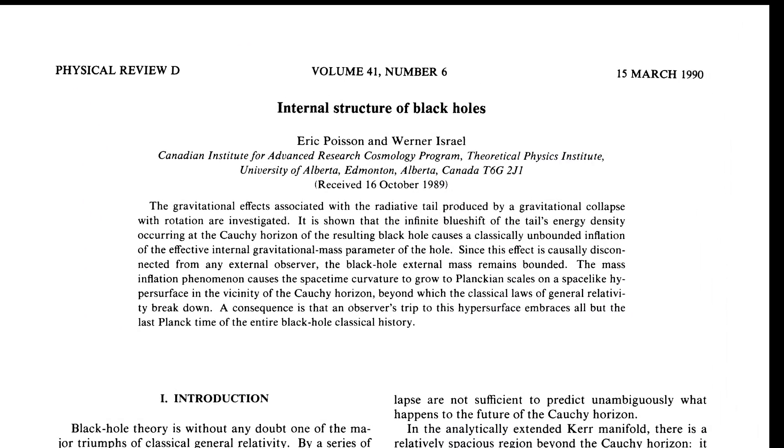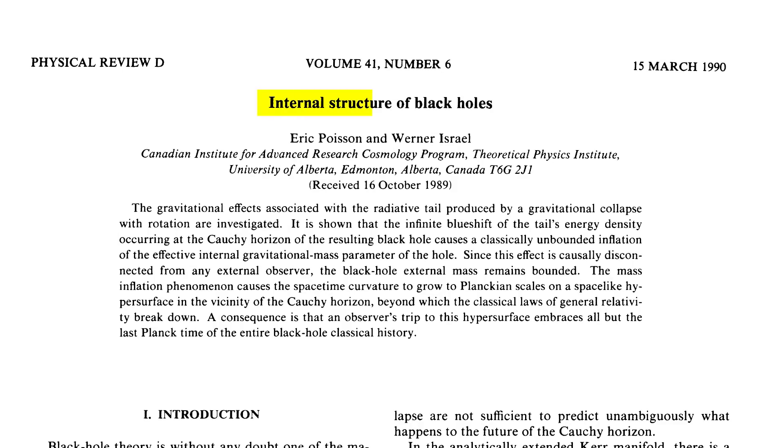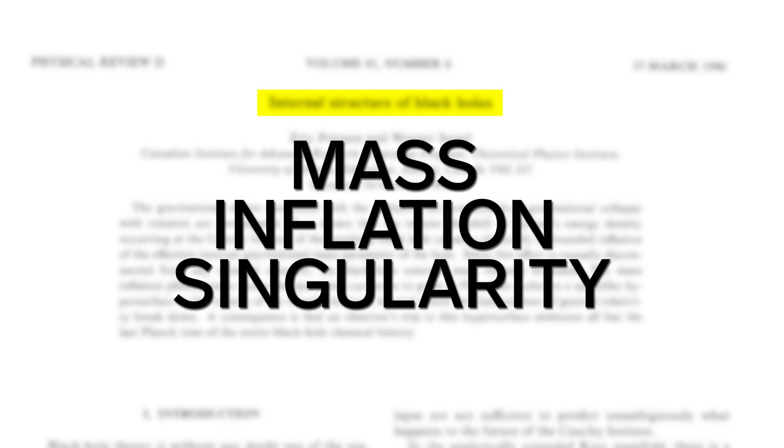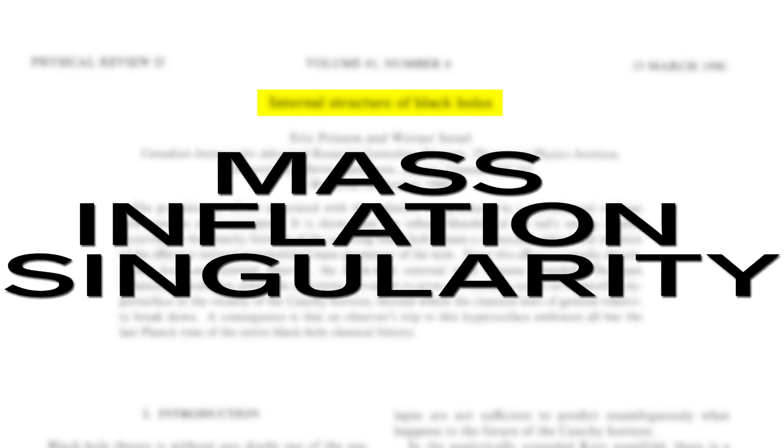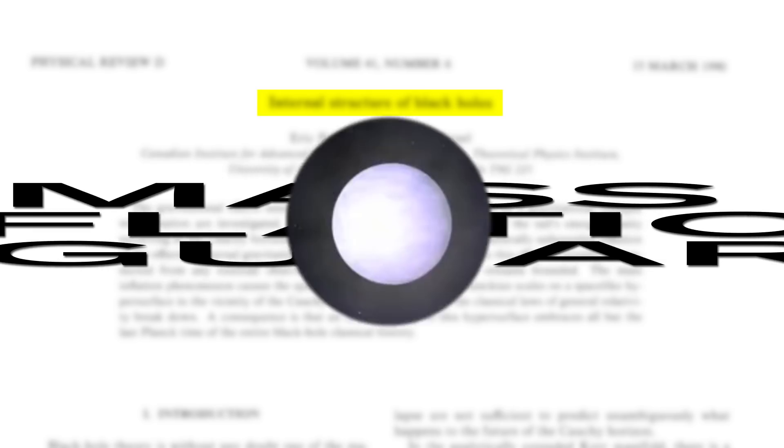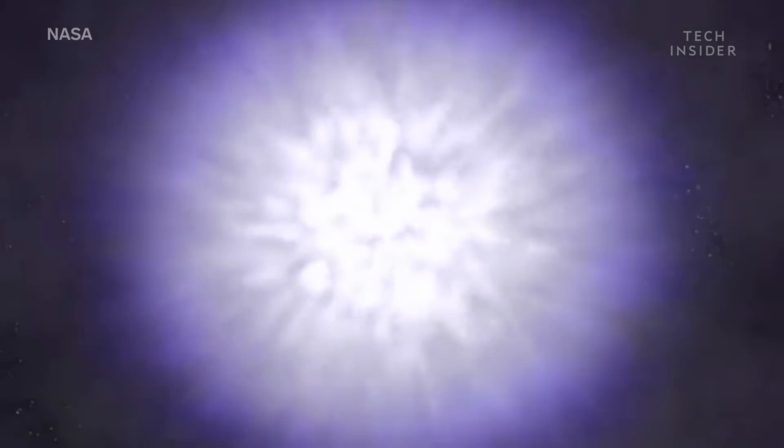But that all changed in the early 1990s, when different research teams in Canada and the US discovered a second singularity, called a mass inflation singularity. It still has a strong gravitational pull, but it would only stretch you by a finite amount, and potentially not kill you in the process.